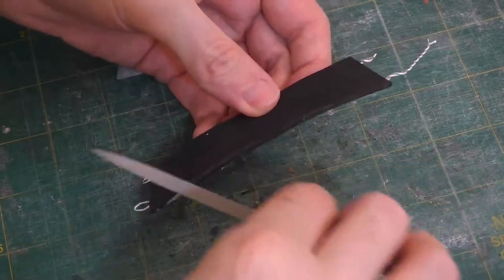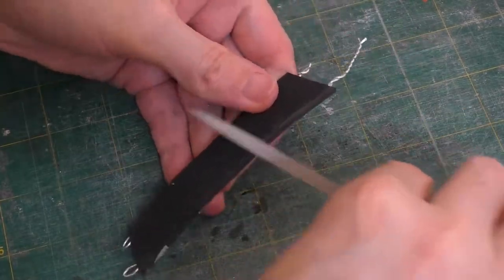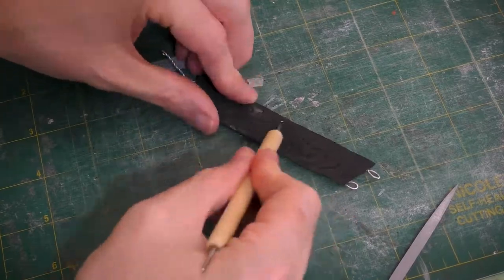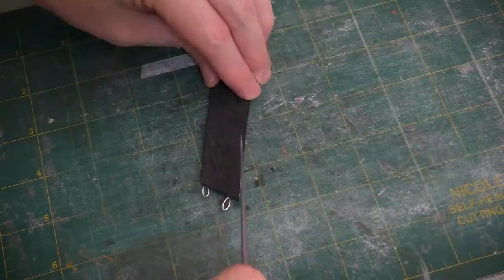Next, we'll file the edges of our gorget piece into about a 45 degree angle. Now we'll take a little ball stylus and a needle file to create some texture.